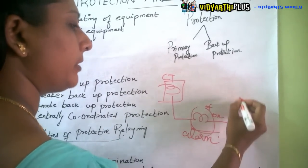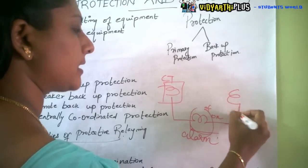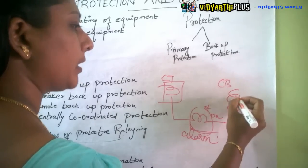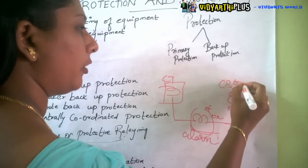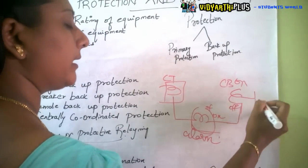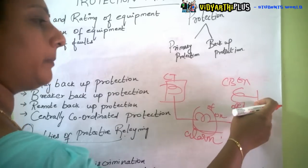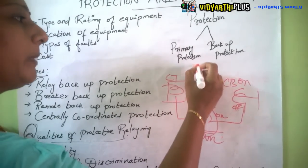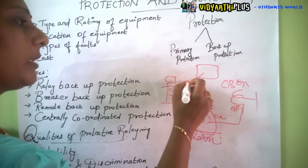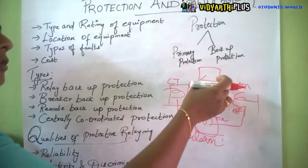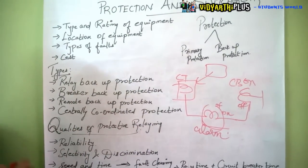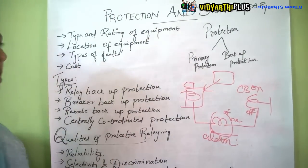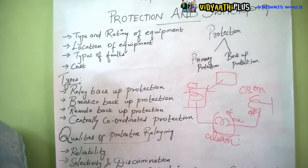From there the information again goes to the circuit breaker, where the circuit breaker goes from on to off position. Immediately the circuit will be tripped off and this equipment will be isolated from the rest of the equipment. So the fault is being protected at that stage itself. That is the main aim for protection switchgear.